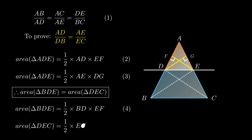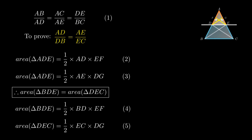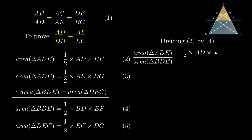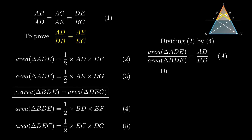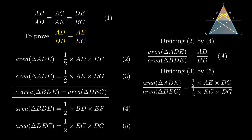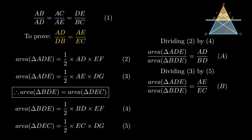Similarly, area of triangle DEC equals half times EC into DG. Now to find the ratio of side AD and BD, dividing equation 2 by equation 4 and simplifying, we get the ratio of triangle ADE to triangle BDE as AD upon BD. Similarly, on dividing equation 3 by equation 5, we get the ratio of area of triangle ADE to triangle DEC as AE upon EC.